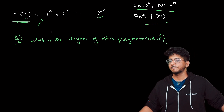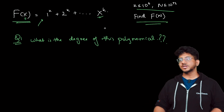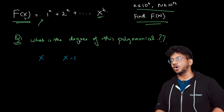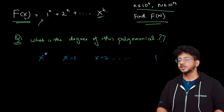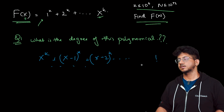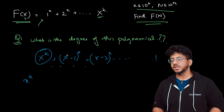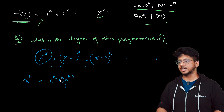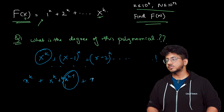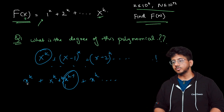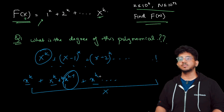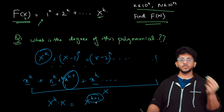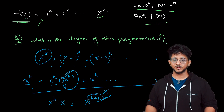The degree of this polynomial is k+1, not k. Why? You have x^k + (x-1)^k + (x-2)^k + ... + 1^k. If you expand (x-1)^k binomially, the highest order term is x^k, and there are x such terms, so summing gives x · x^k = x^(k+1). Therefore the degree of this polynomial is k+1. That's very important — a lot of people make a mistake here.